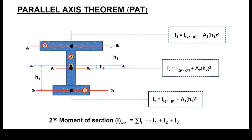Once you've identified the individual centroids, use that information to work out where the global centroid position will be — the centroid for the entire shape — and introduce the global neutral axis. This neutral axis Xi is with respect to the reference axis: the horizontal axis is characterized by X and the vertical axis by Y.